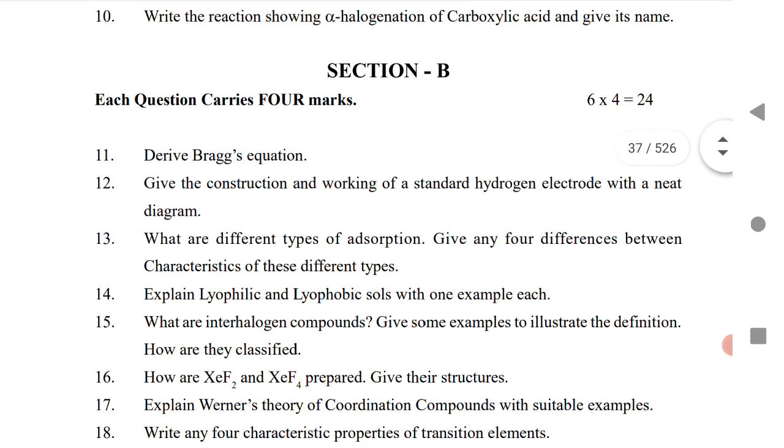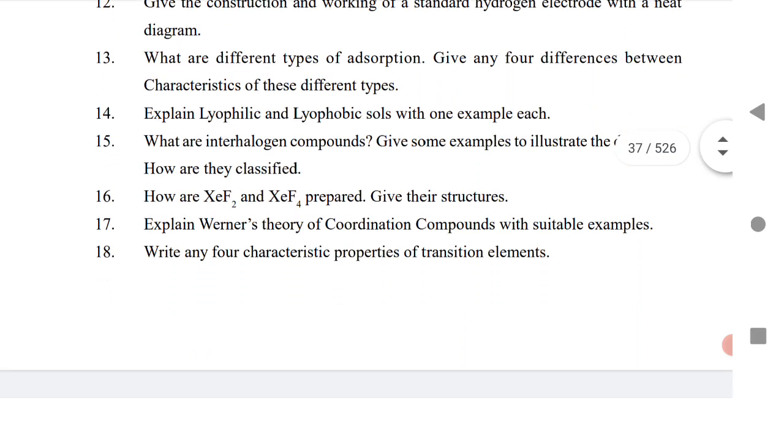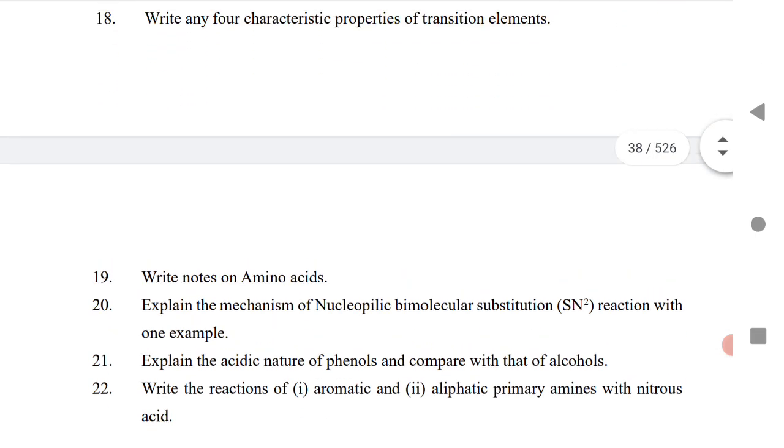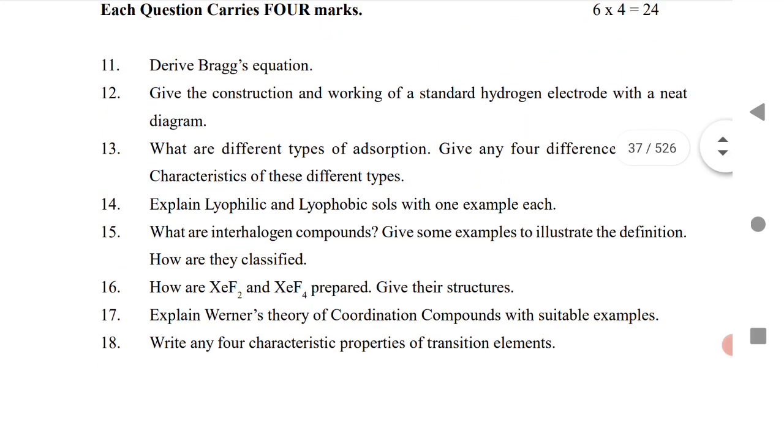Let us see Section B, the 4 marks questions. We know that previously the IPE gave 11 to 18 questions and asked us to do 6 questions. But here you have to do 6 questions but the options are more. The options are from 11 to 22. Now they increased 4 more options for you.